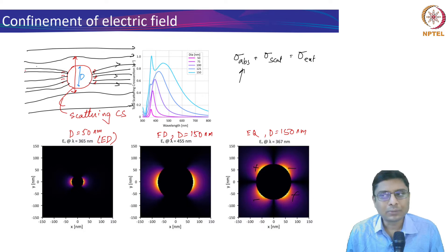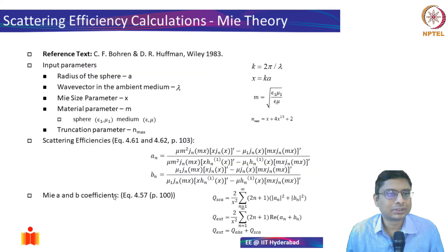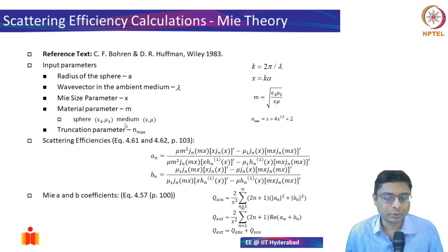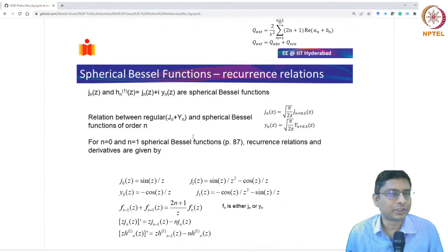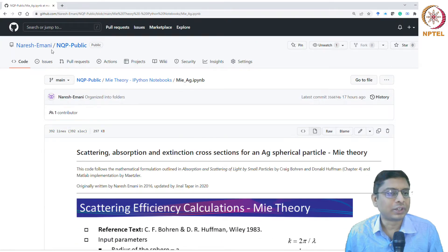What I'm going to do is show you the code that I've used to calculate. This is a Python notebook, iPython notebook, which you can run using software known as Anaconda. I've put this on GitHub. If you go online and look for a repository called nqp_public, hosted under my name, search for Naresh Emani on GitHub.